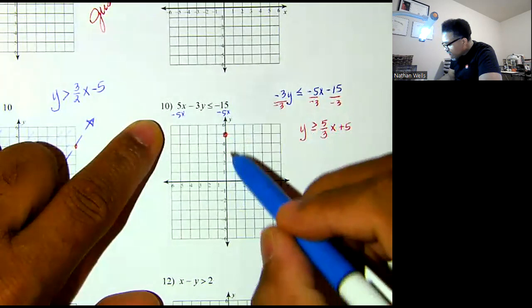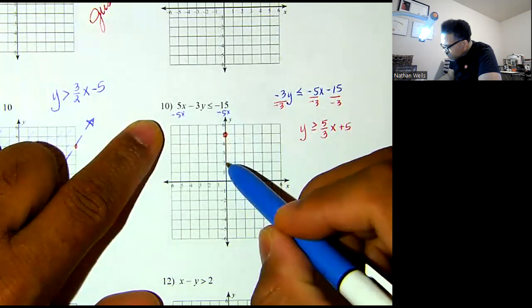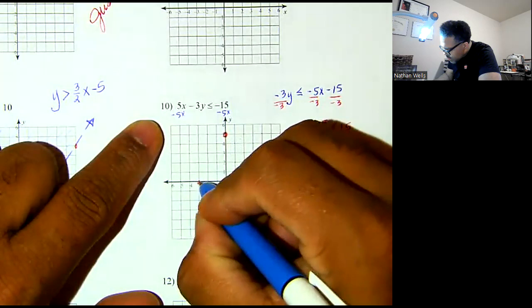But I don't have enough room to rise 5, so I'll work backwards. I want to fall 5: 1, 2, 3, 4, 5, and go to the left 3: 1, 2, 3. Plot a point.